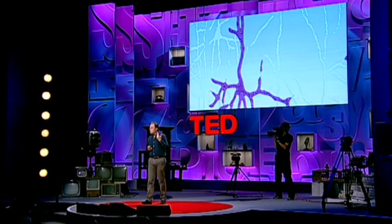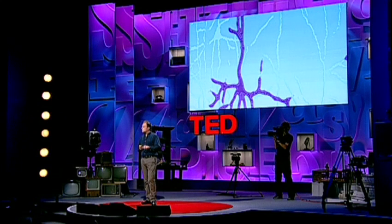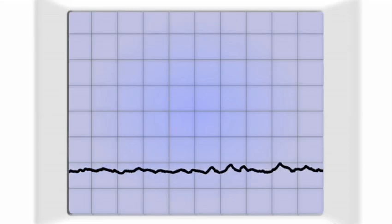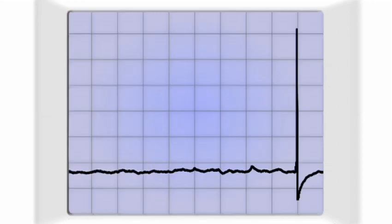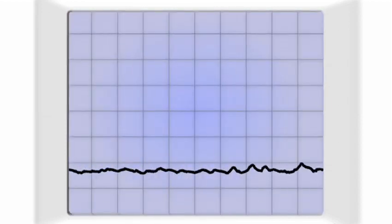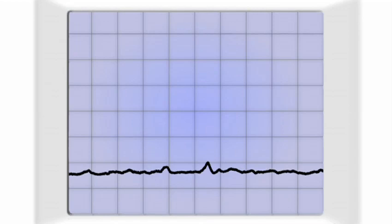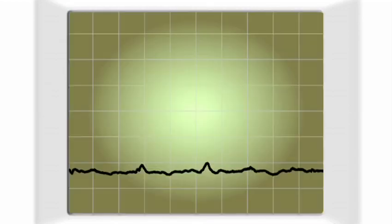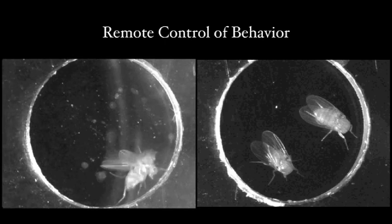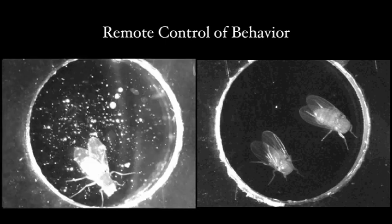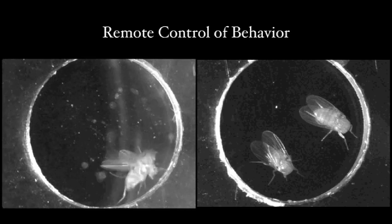In this cartoon, the bluish-white cell in the upper left corner does not respond to light because it lacks the light-activated pore. The approach works so well that we can write purely artificial messages directly to the brain — each electrical impulse, each deflection on the trace, is caused by a brief pulse of light. And the approach of course also works in moving, behaving animals. This is the first ever such experiment — the optical equivalent of Galvani's — done six or seven years ago by my then-graduate student, Susana Lima.